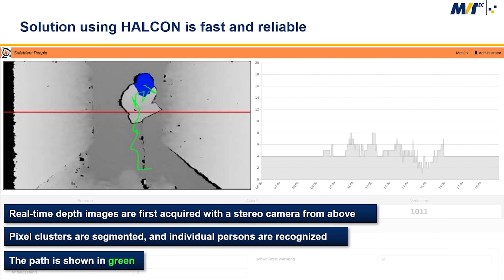Using the mathematical morphological algorithms integrated in Halkan, pixel clusters are segmented and individual persons are recognized based on their characteristic appearance on the depth image. Using a tracking method, the found persons are assigned waypoints spanning several images to create a path representing their movements. The path is shown in green on the slide.